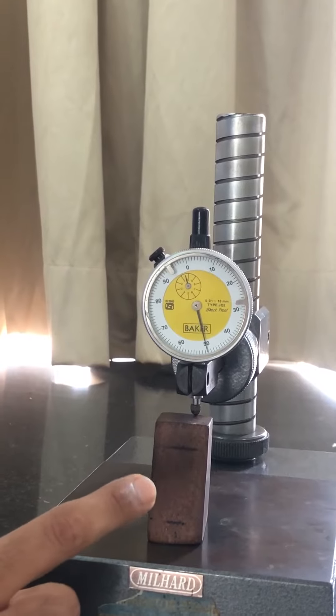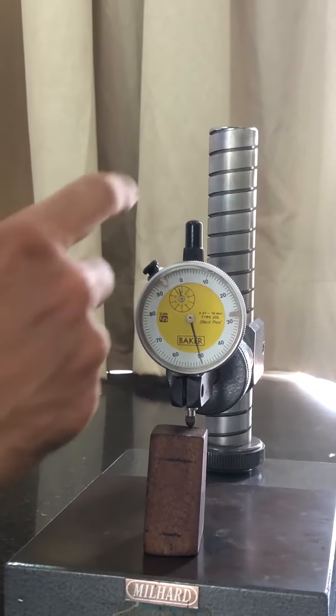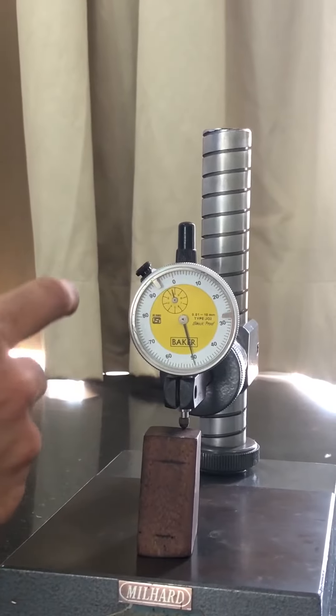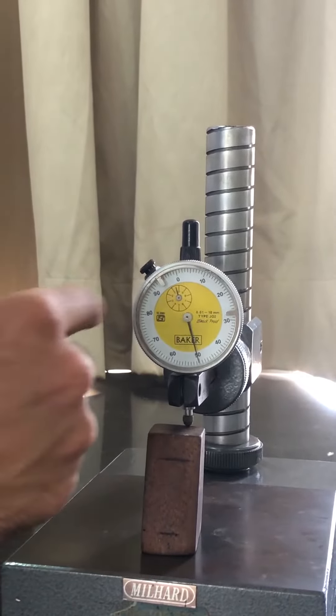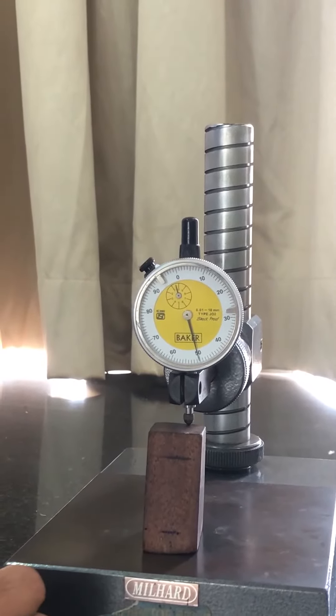The least count of this dial gauge is 0.01 mm because there are 100 divisions and one complete rotation on the outer scale or dial scale will cause the main scale to rotate by one division. So the least count is 0.01 mm.